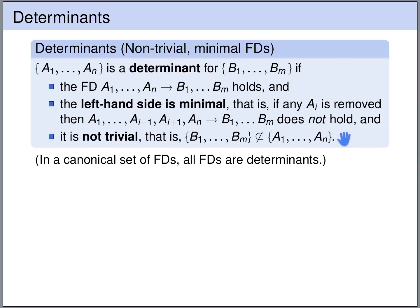This functional dependency should also not be trivial, so the right-hand side should not be a subset of the left-hand side. If all of these conditions hold — it is a functional dependency, it is minimal, and it is not trivial — then we call this functional dependency a determinant.